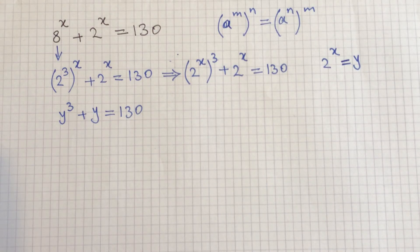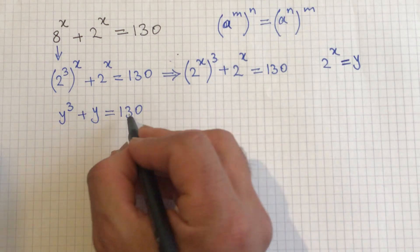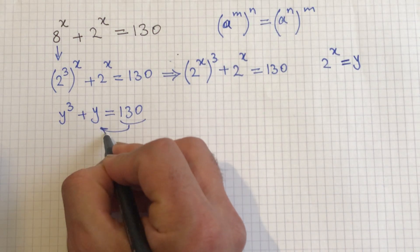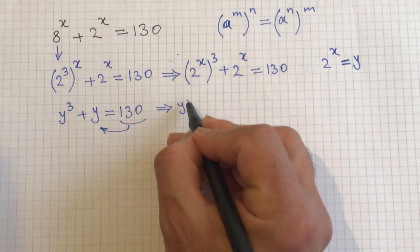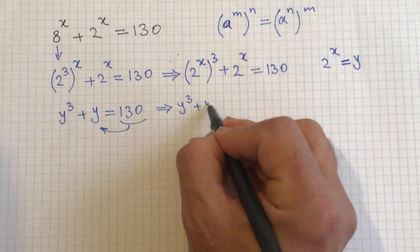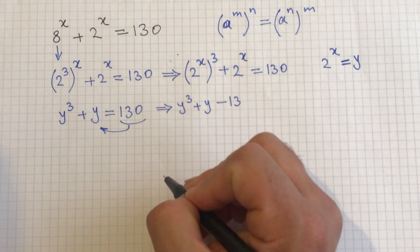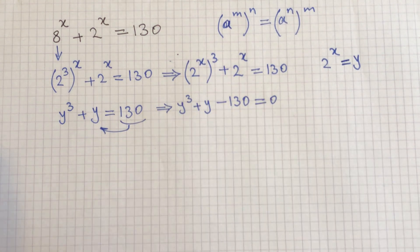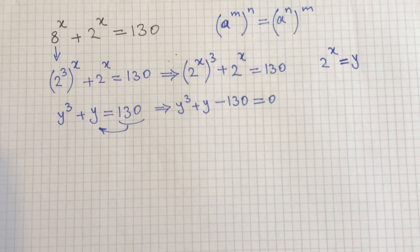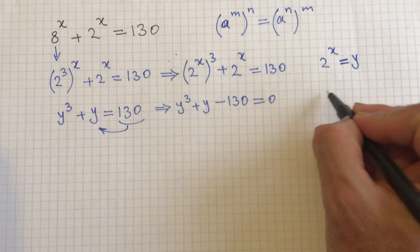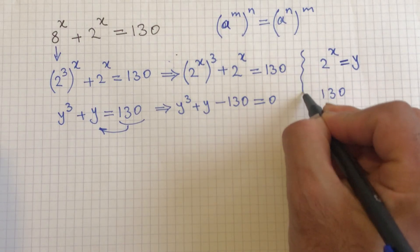Now I take 130 to the left side and flip the sign, giving y cubed plus y minus 130 equals 0. This is a third-order equation, but we can use another trick to simplify it.